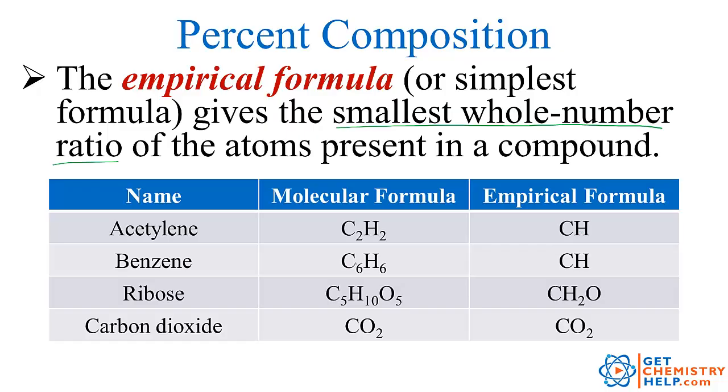Benzene is 6 carbons and 6 hydrogens. Well 6 to 6 could also be reduced down to 1 to 1. So acetylene and benzene, while they have different molecular formulas, they have the same empirical formula.